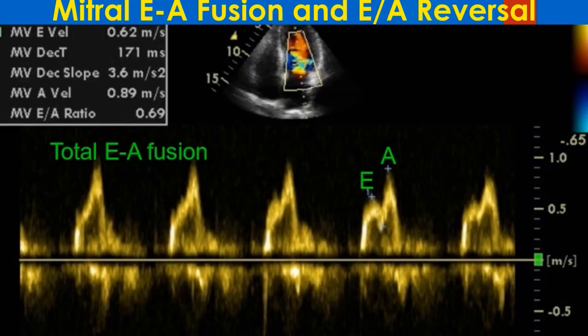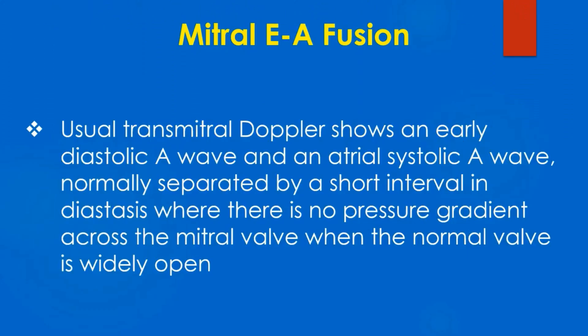Transmitral Doppler tracing from the apical 4-chamber view shows varying degrees of fusion of mitral E and A waves. E by A reversal is also evident in the later 3 beats due to partial EA fusion. Usual transmitral Doppler shows an early diastolic E wave and an atrial systolic A wave, normally separated by a short interval in diastasis where there is no pressure gradient across the mitral valve when the normal mitral valve is widely opened.